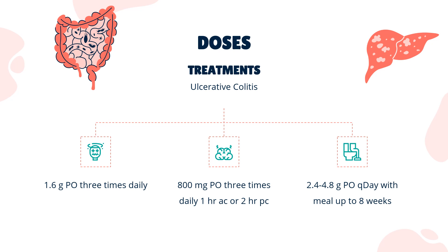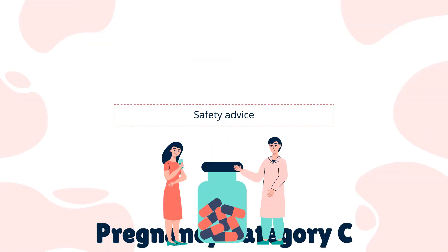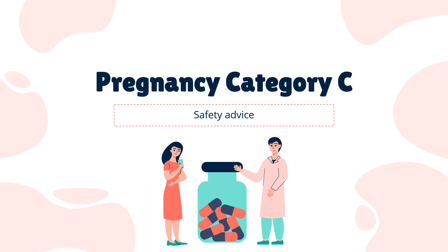Crohn's Disease (off-label), Remission Induction of Active Mild to Moderate Disease: Asacol HD 1.6g 3x daily; Lialda 2.4–4.8g PO once daily with meal for up to 8 weeks; Pentasa 1g PO 4x daily for 8 weeks.